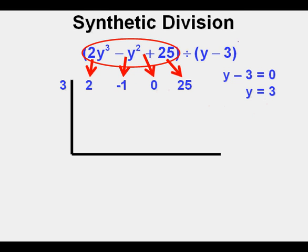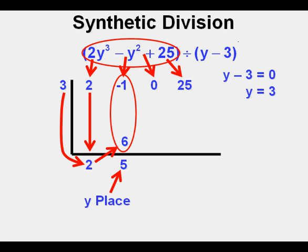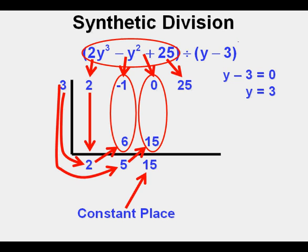Next we bring down the coefficients from the dividend. Then we bring down the 2 below into the y squared place. Next we take 3 times 2 and place that number 6 here inside the form at the bottom. Then we add the negative 1 and 6 together and get 5 below in the y place.